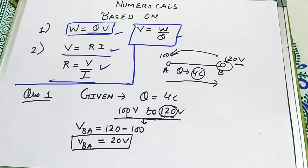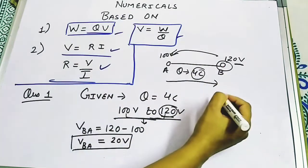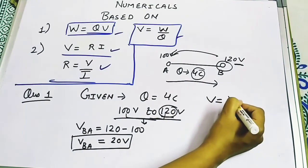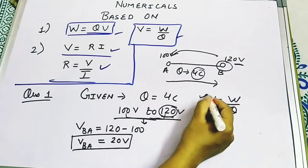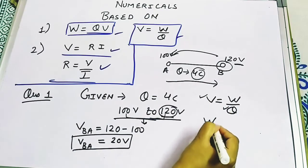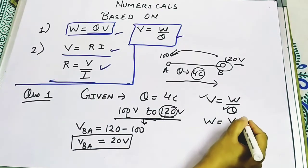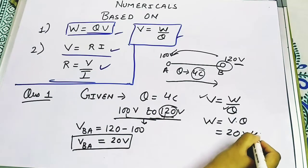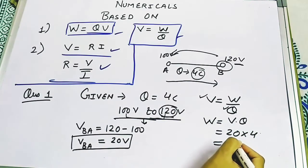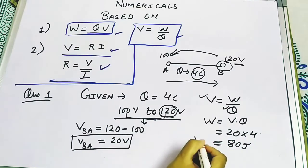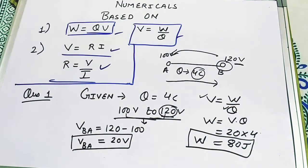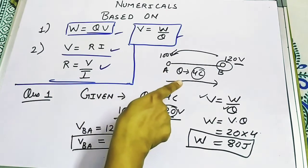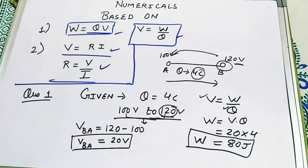Now, what we have to calculate is the amount of work done, that is W. The formula is V equals W upon Q. We have V and we have Q, so we need to find W. Work done equals potential into charge: that is 20 into 4, which gives us 80 joules. So 80 joules of work is required to bring this 4 coulombs of charge from point A to point B.